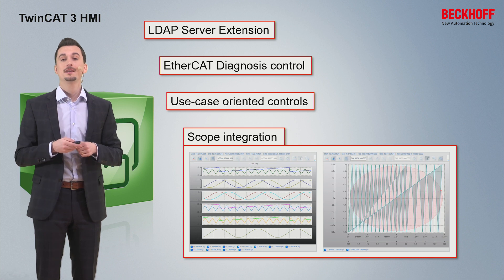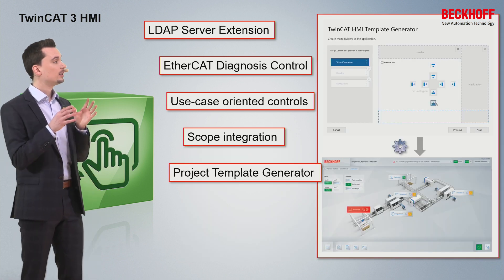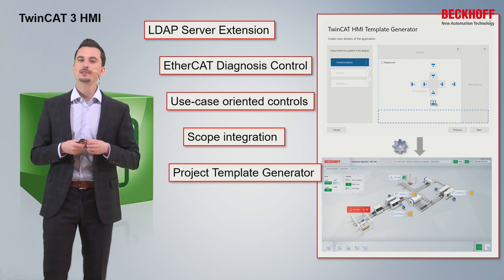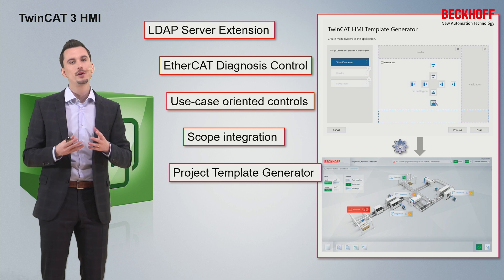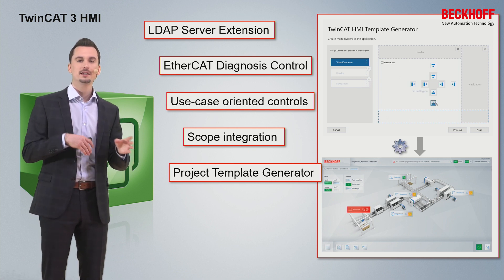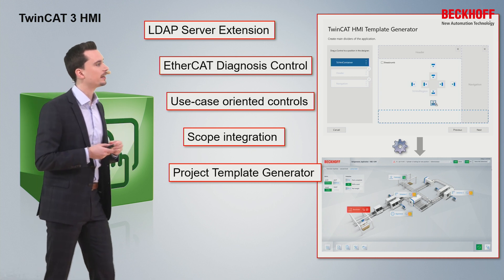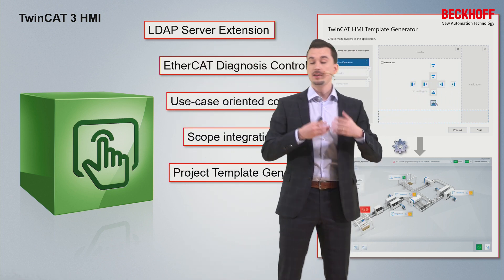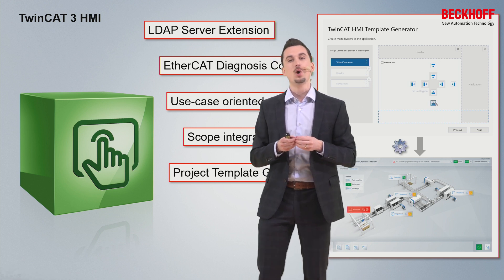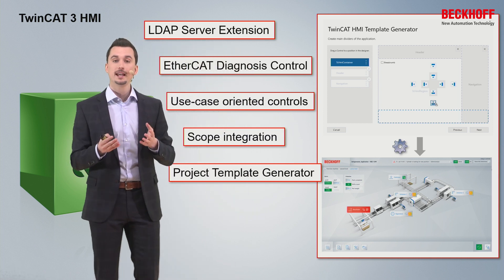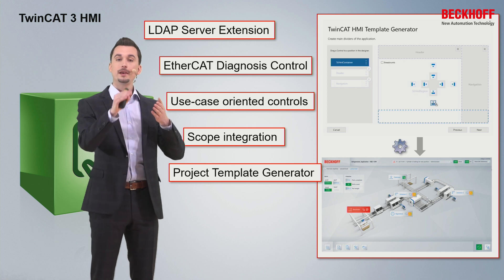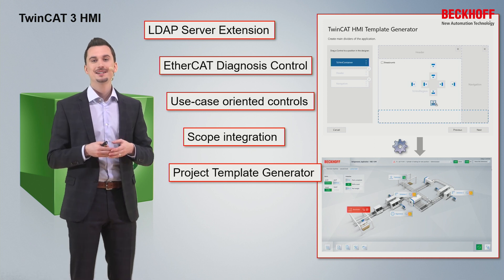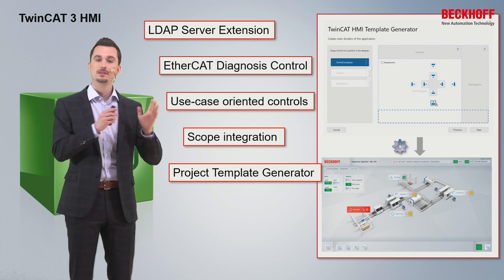Also in the second quarter of this year, we are planning to add a totally new tooling: the project template generator. You can use this tooling to generate the basic structure of your new HMI project without having to manually set all the different containers. You simply drag and drop, for example, the header on top, the navigation on the right side, and other containers if needed onto the screen. You can also select the structure of the navigation, add different pages on different levels, and then generate your HMI project and directly start implementing without having to care about these basic steps.